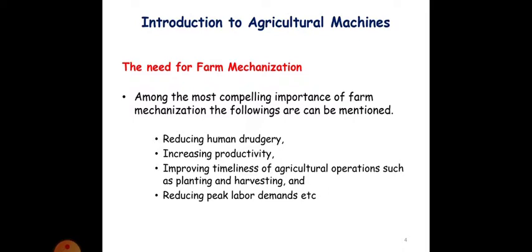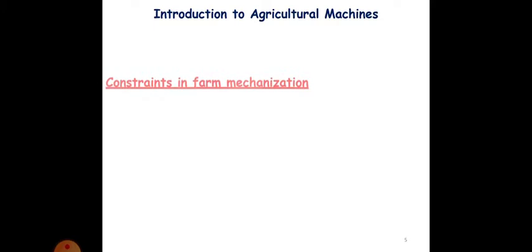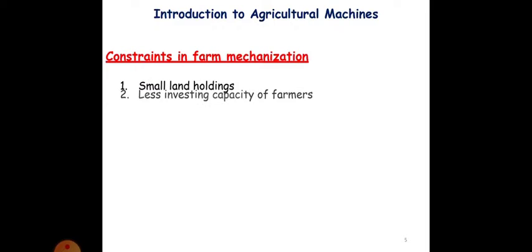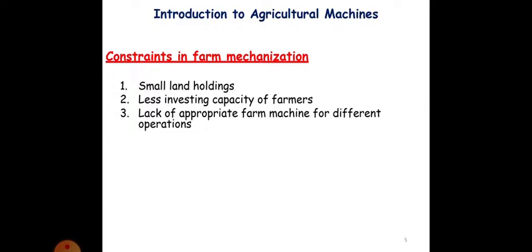The major constraints in farm mechanization are: first is small land holdings. The farmers with small land holdings can have some constraints in adopting farm mechanization. Less investing capacity of the farmers is a very important constraint. Lack of appropriate farm machine for different operations. High cost of machines.